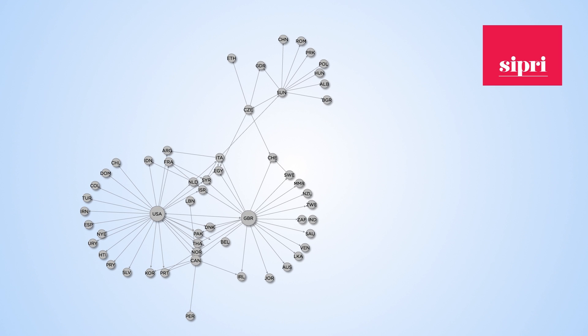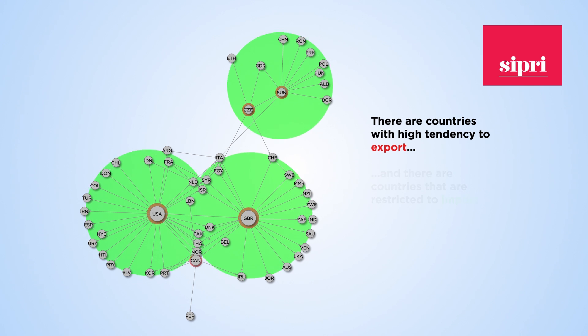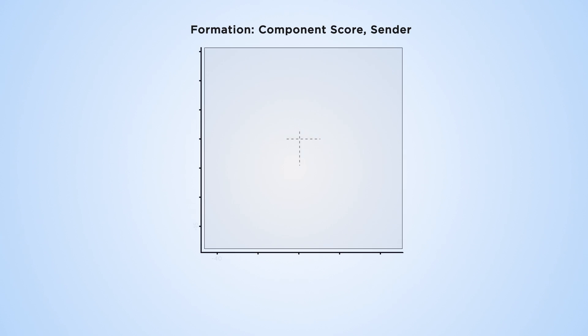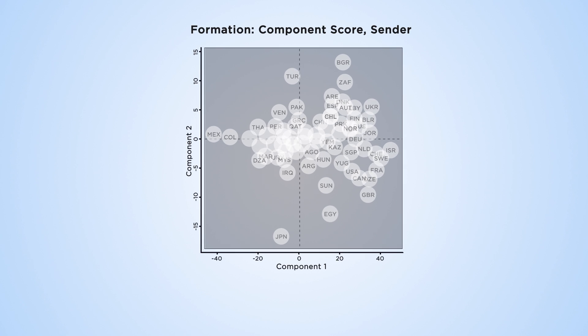Data collected by the Stockholm International Peace Research Institute provides a useful illustration of the variation between countries. We can use a type of analysis called Principal Component Analysis to look at this further. Each country is given a value for a particular component, and this component is given a definition.